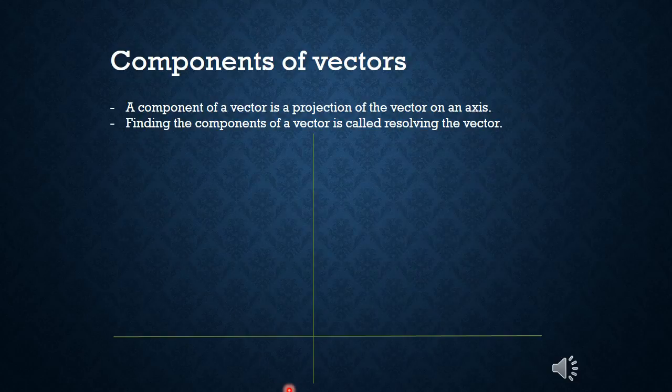I told you that we aren't always going to add vectors graphically — in fact you're not going to do it very much at all. How you're typically going to add vectors is by using components. A component of a vector is a projection of the vector on an axis, and when we find the components of the vector we also call that resolving the vector.